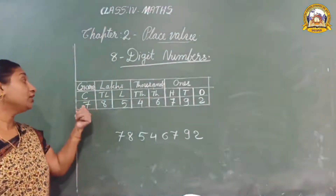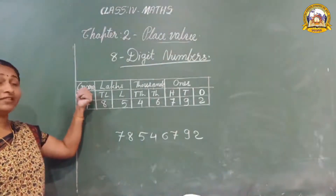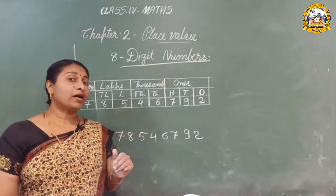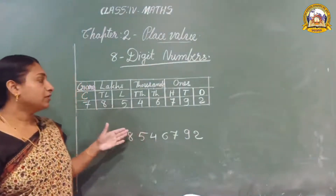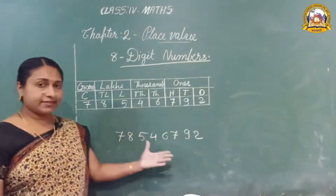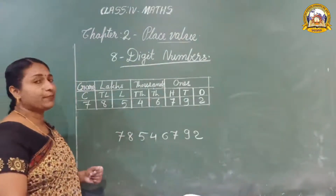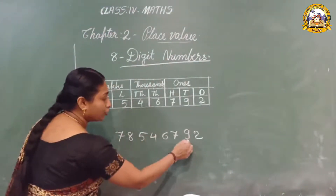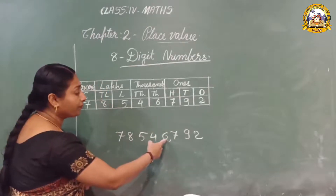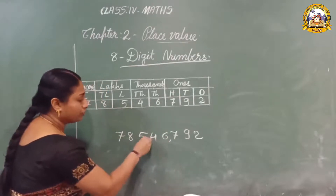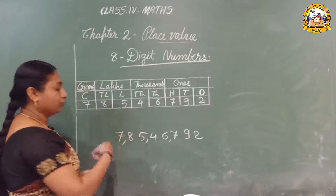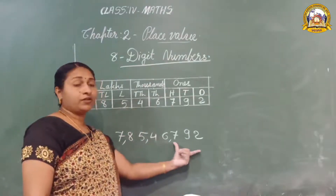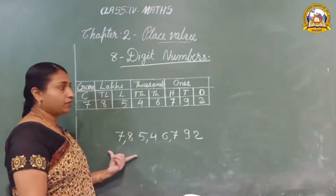Yes, we have seen a new member — crore, C-R-O-R-E. Let us give the comma to separate the periods. Count from the right: one, two, three — comma. Then one, two — comma. Then one, two — comma. Like this we can give the commas.